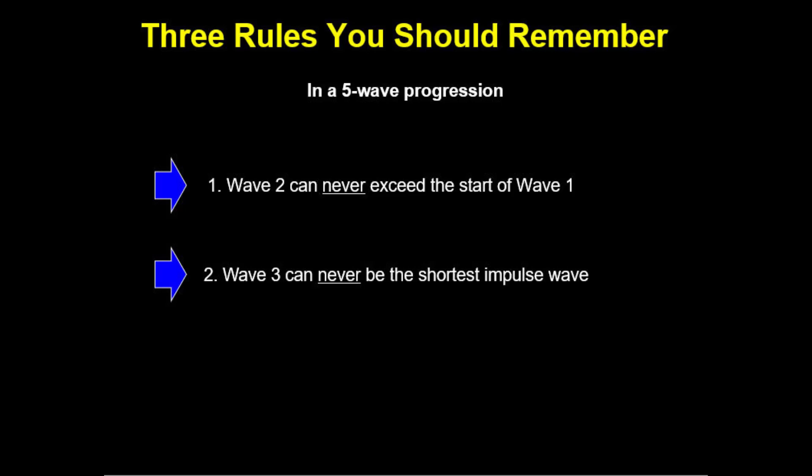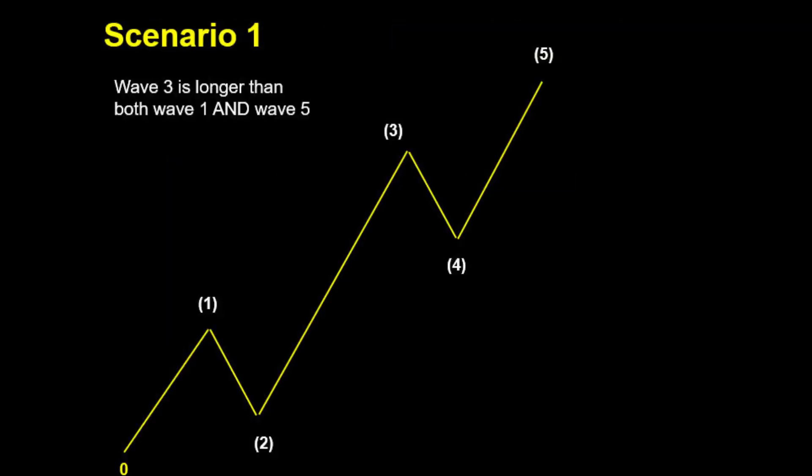The second rule states that wave 3 can never be the shortest impulse wave in a 5-wave cycle. Remember, every wave in the direction of the trend — whether it is an uptrend or a downtrend — is made up of five sub-waves. Three of these five waves are in the direction of the trend and are known as impulse waves. The rule says that wave 3, the wave that happens in the middle, can never be smaller than both wave 1 and wave 5.